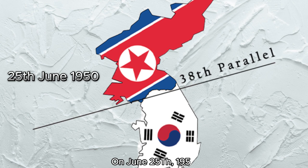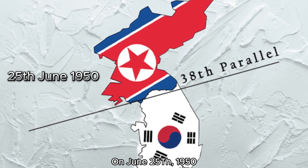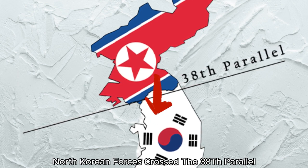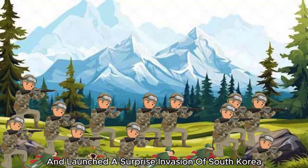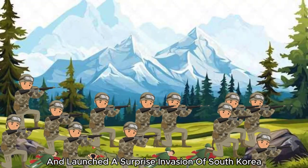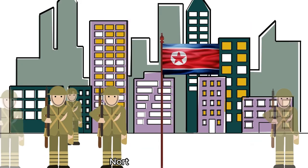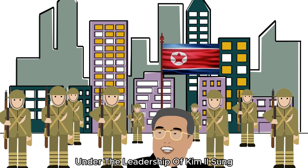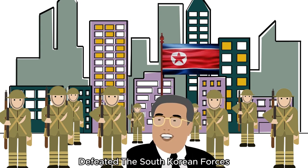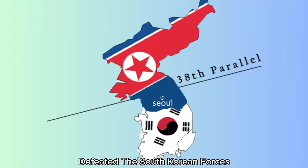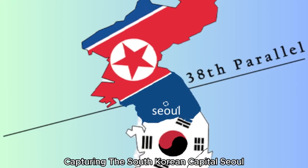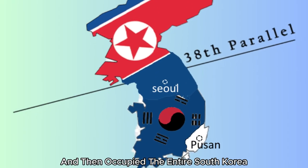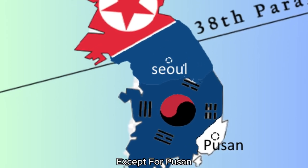On the 25th of June 1950, North Korean forces crossed the 38th parallel and launched a surprise invasion of South Korea. North Korean forces under the leadership of Kim Il-sung defeated the South Korean forces, capturing the South Korean capital, Seoul, and then occupied the entire South Korea except for Pusan.